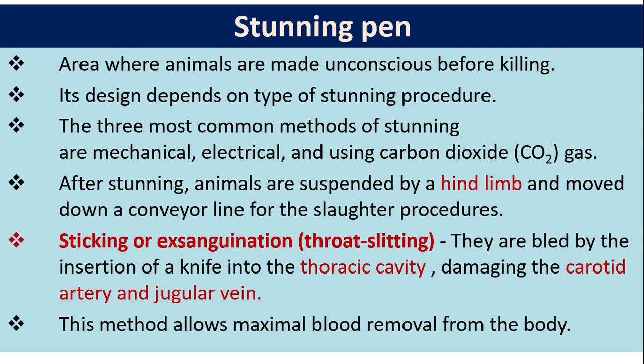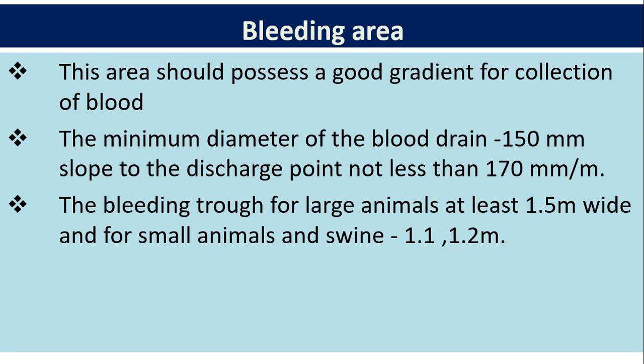After stunning, animals are suspended by the hind limb and moved down a conveyor line for slaughter procedures. Sticking, or exsanguination, means throat slitting — animals are bled by insertion of a knife into the thoracic cavity, damaging the carotid artery and jugular vein, allowing maximal blood removal. The bleeding area should have a good gradient for blood collection. The minimum diameter of the blood drain is 150 mm, with a slope to the discharge point of not less than 170 mm per metre. The bleeding trough for large animals should be at least 1.5 metres wide, and for small animals and swine, 1.1 to 1.2 metres.